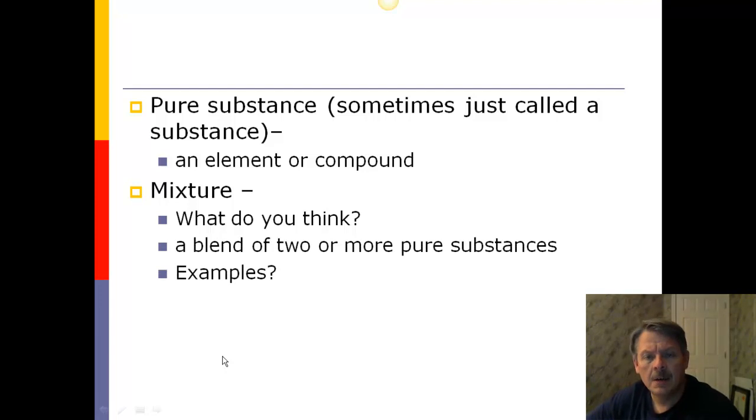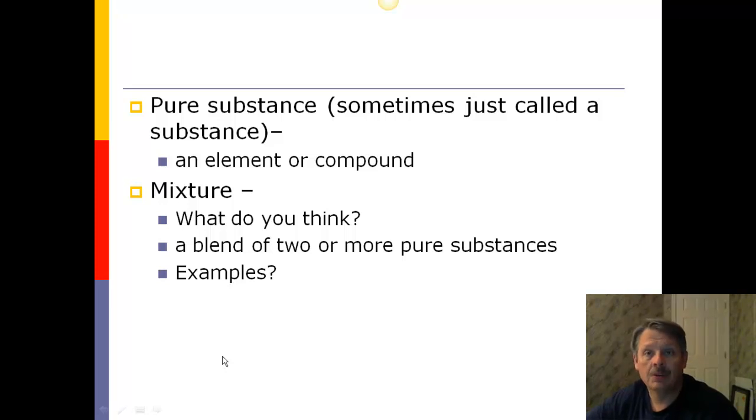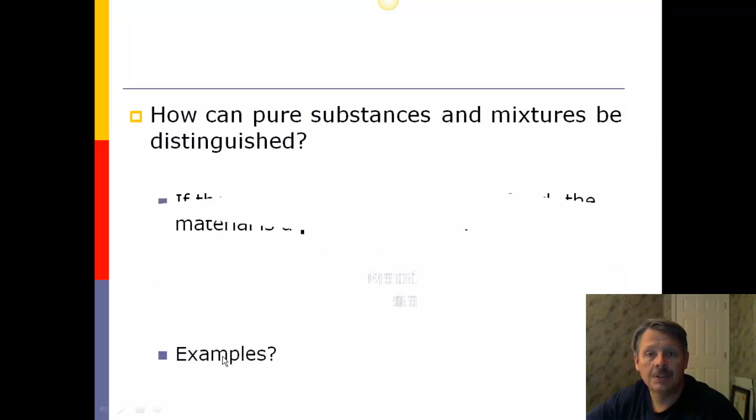A mixture, very simply, is a blend of two or more pure substances. So, can we think of some examples? Again, pause the video so you can come up with a couple. Mixtures might be chocolate milk, paint, salt water, sugar water. Lots of things around you are mixtures. Dirt is a mixture. A chocolate chip cookie is a mixture. A blueberry muffin or a poppy seed bagel, they're all mixtures.